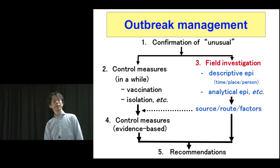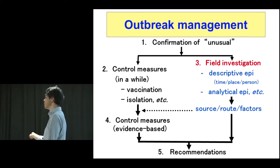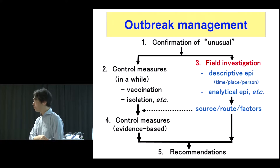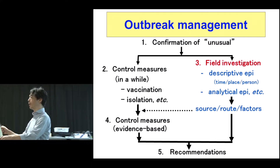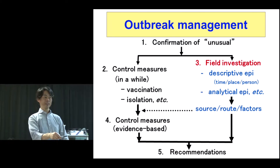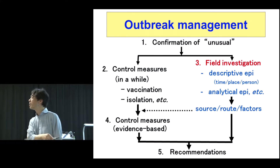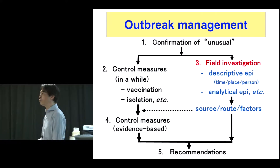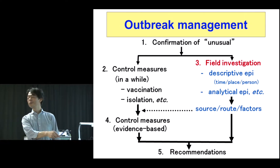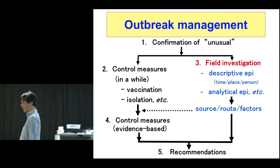Let's focus on the outbreaks — the source, the transmission route, how pathogens are transmitted, how contaminated water or something like that spreads. And the risk factors for this outbreak or these diseases: what kinds of factors are influencing the outbreak? After we identify these source, route, and factors, we can move on to real control measures.